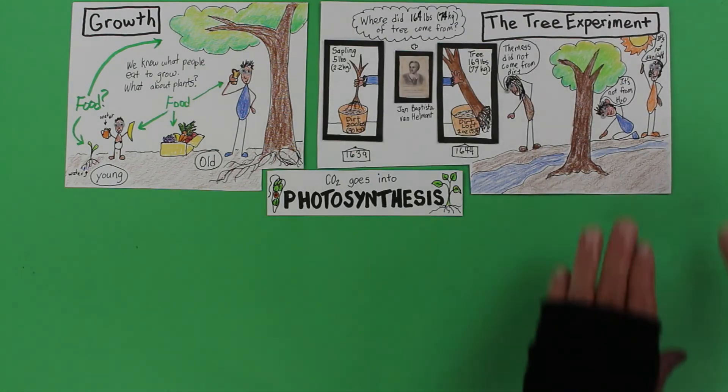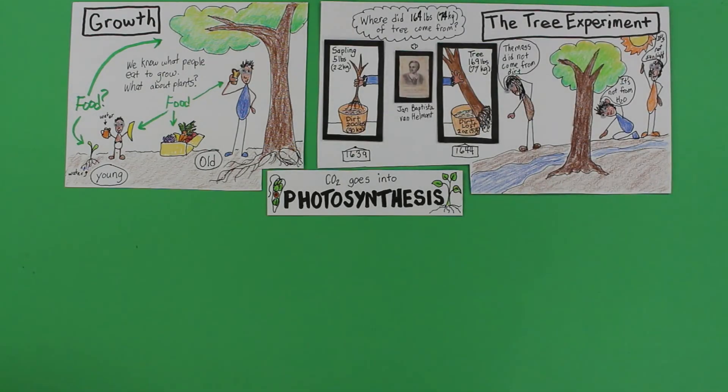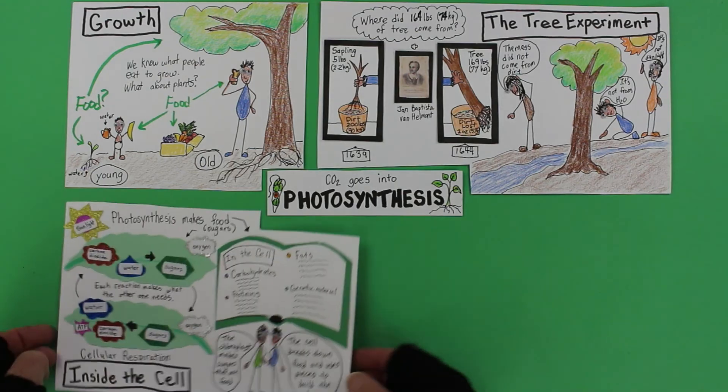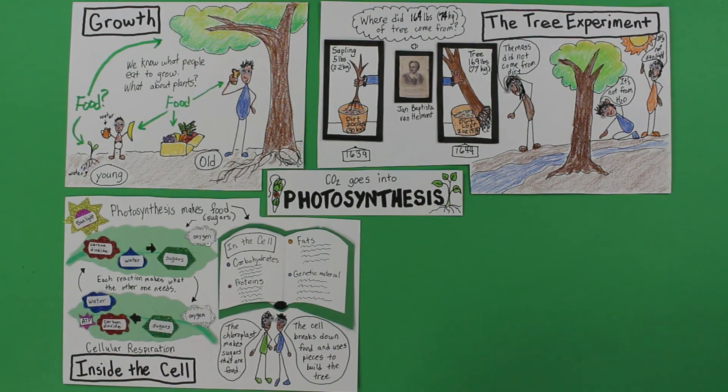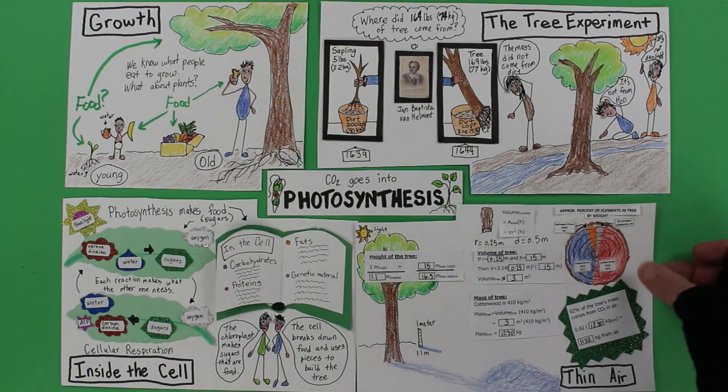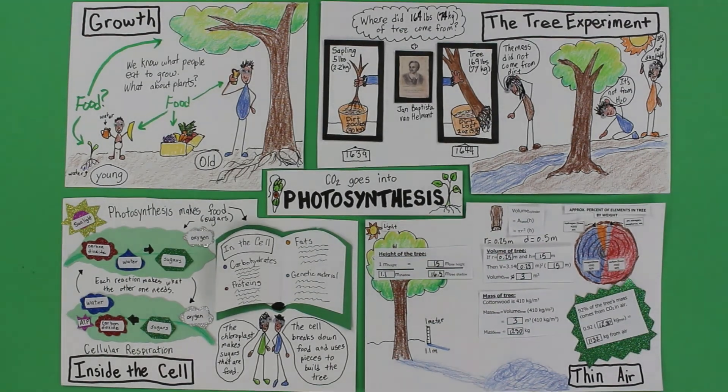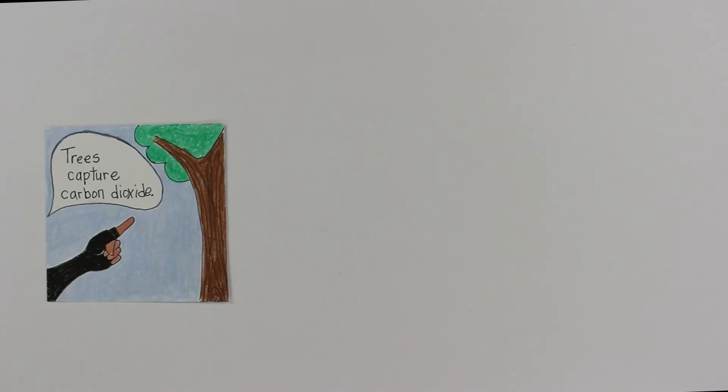What does a plant eat to grow? The mass of a plant, a tree for example, is not primarily from soil, water, or sunlight. Photosynthetic cells use carbon dioxide and water to produce sugars, food molecules. Those sugars provide energy to the cell during cellular respiration. And those sugars are also broken into pieces and reused to make carbs, fats, proteins, and some genetic material. When you're looking at a tree, its mass is mostly from carbon dioxide gas.